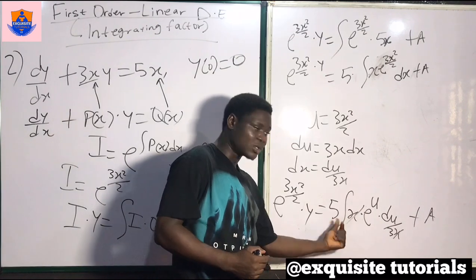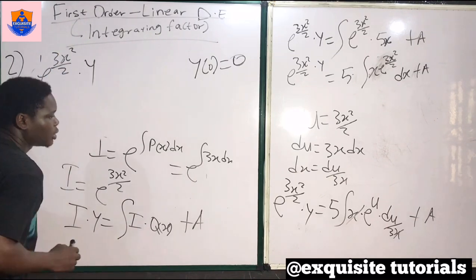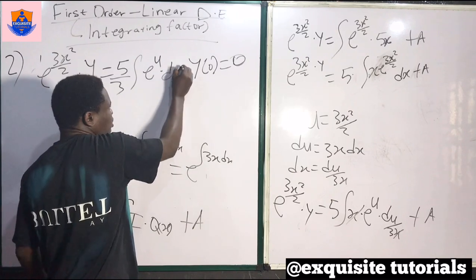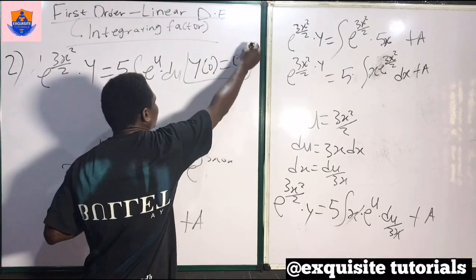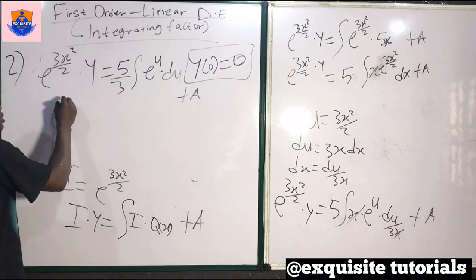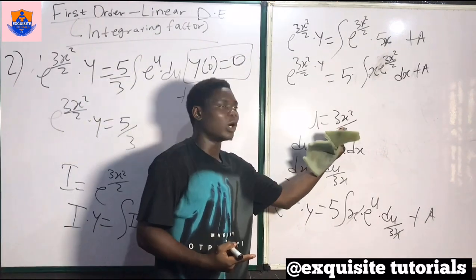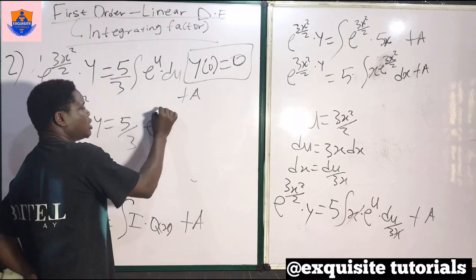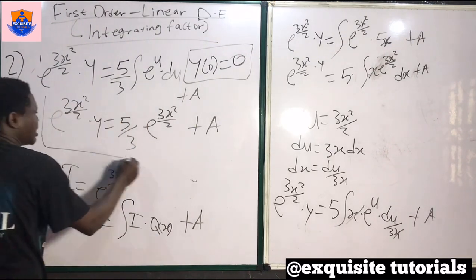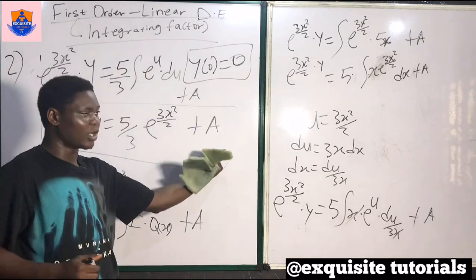So I bring the one-third outside: e^(3x²/2) times y equals 5 over 3 times the integral of e^u du. When I integrate e^u, I get e^u. Replacing u back, I get e^(3x²/2). So we have: e^(3x²/2) times y equals 5 over 3 times e^(3x²/2) plus our constant a. We can leave the answer in this form.